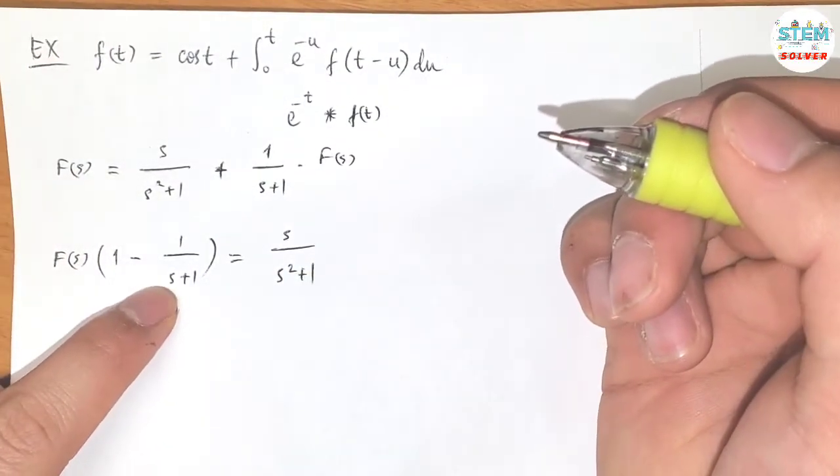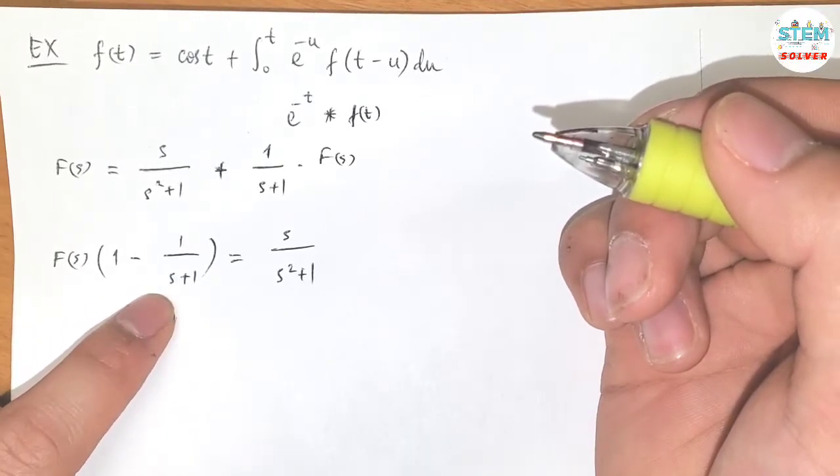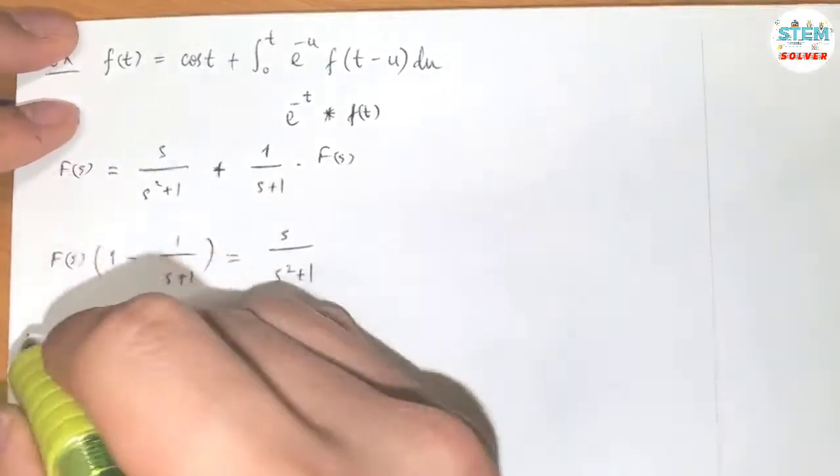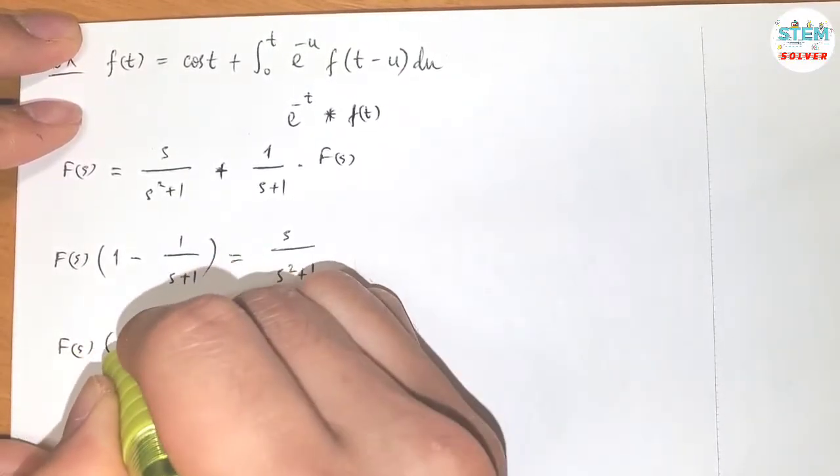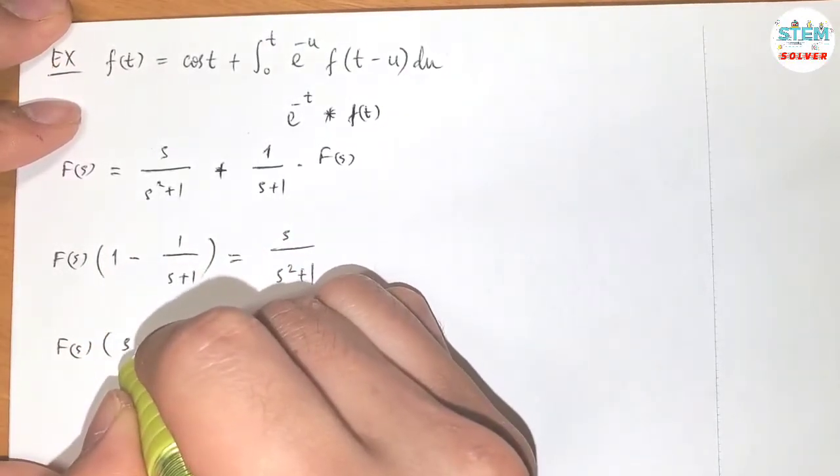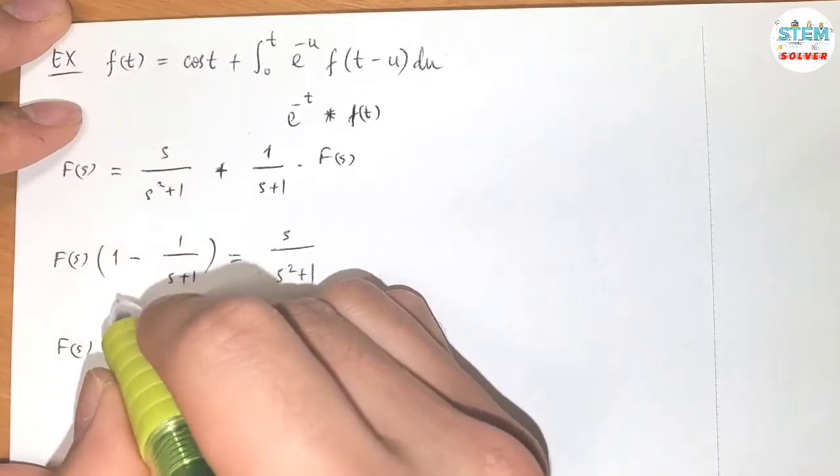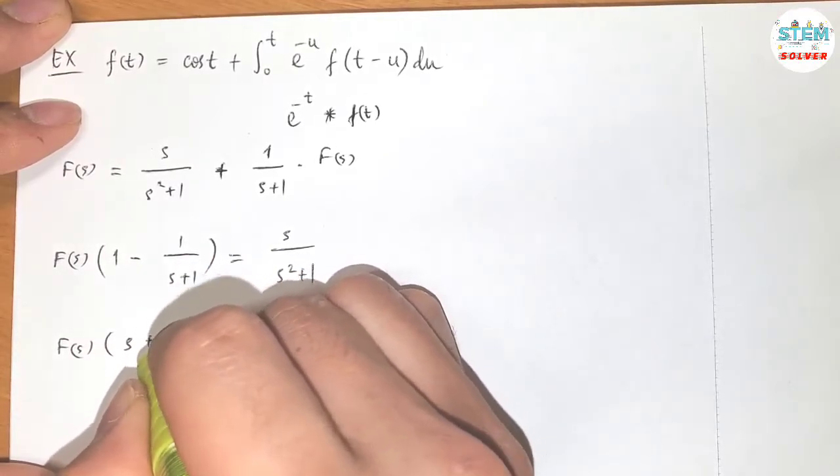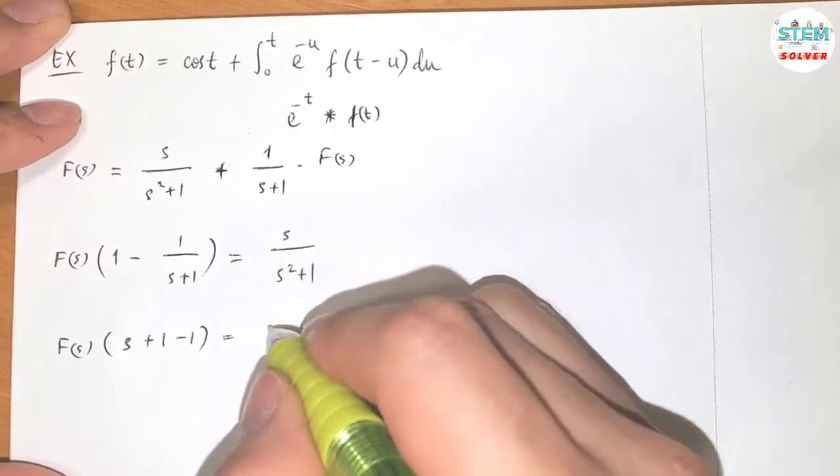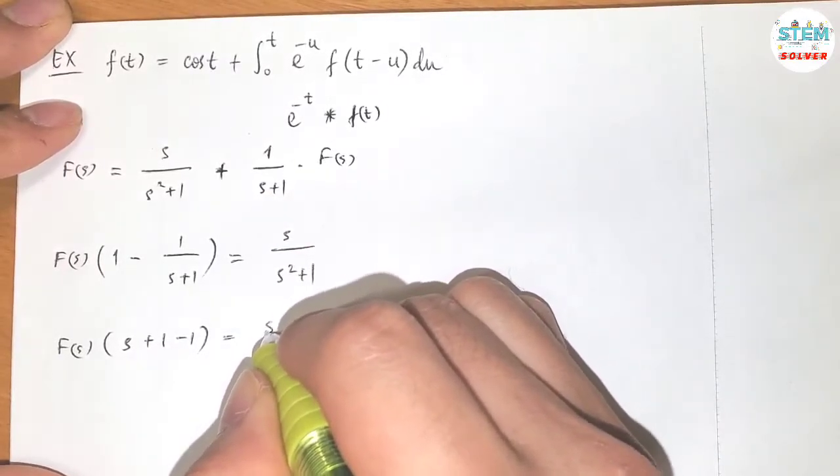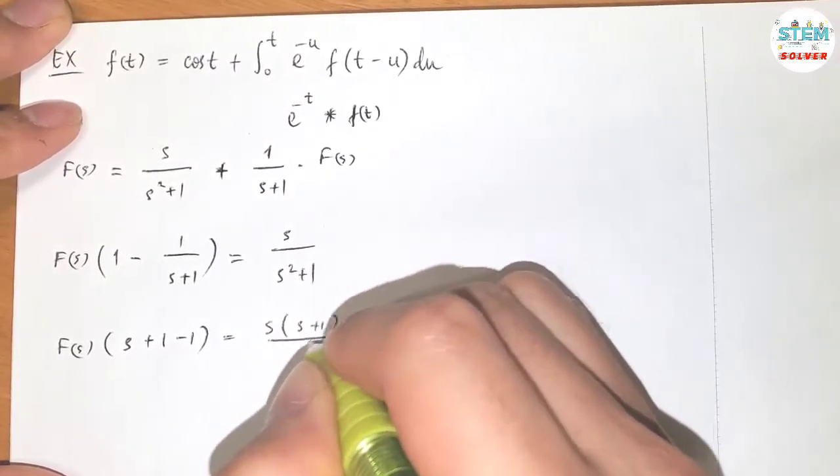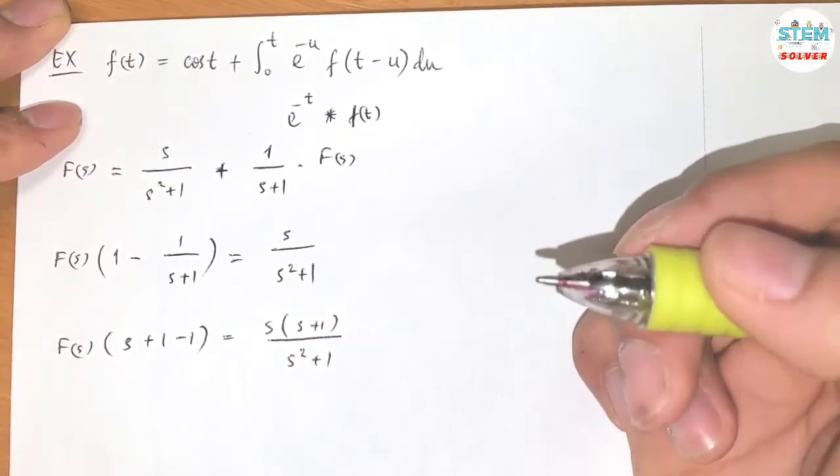Now, since I have fraction here, I would like to work with fraction. What I'm going to do is multiply by s plus 1 on both sides to get rid of it. So I have capital F of s times, F of s plus 1 minus 1, equals s times s plus 1 over s squared plus 1.